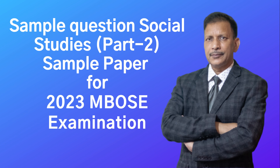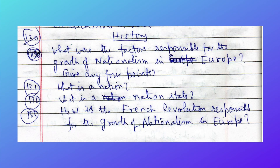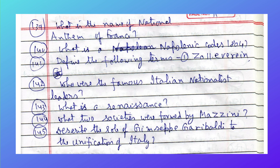Let's start the questions. What were the factors responsible for the growth of nationalism in Europe? Give any four points. What is a nation? What is a nation state? How is the French Revolution responsible for the growth of nationalism in Europe? What is the name of the national anthem of France? What is a Napoleonic Code?